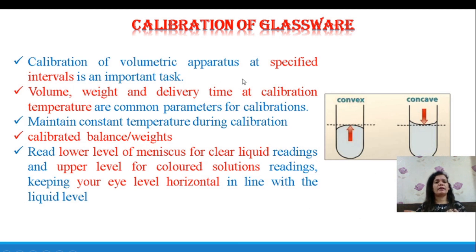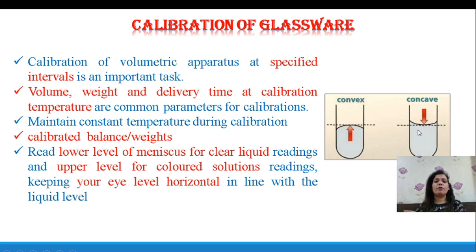Calibration of volumetric apparatus at specified intervals is needed. It is an important task where you maintain temperature parameters constant with respect to volume, weight, and delivery time. While using a balance, you also need a calibrated balance. When measuring the volume on the burette, you need to observe the solvent level — the concave meniscus for colorless solutions and the convex upper meniscus for colored solutions. Your eye level should be at the level of the solvent when observing the meniscus.